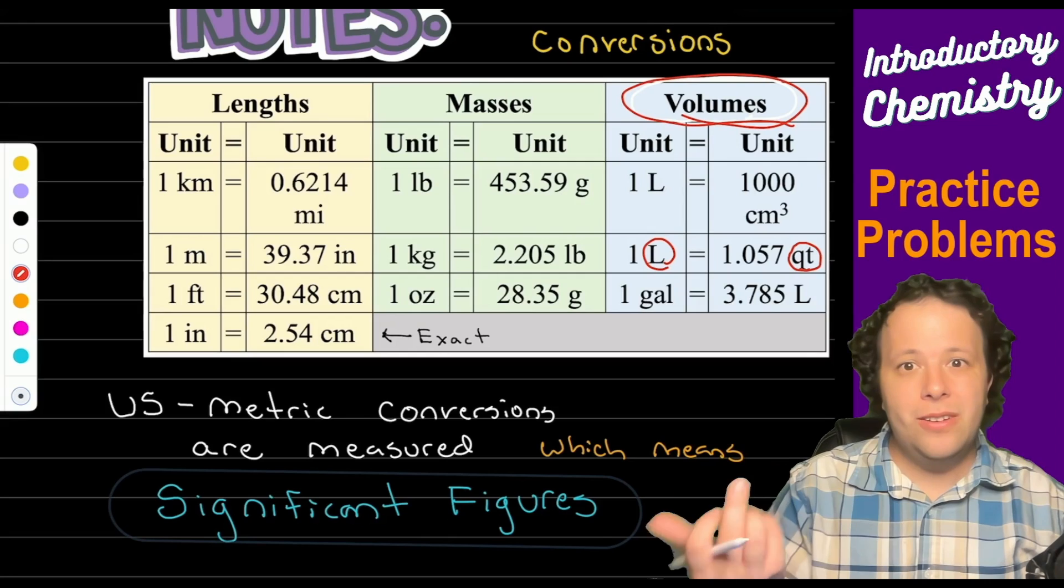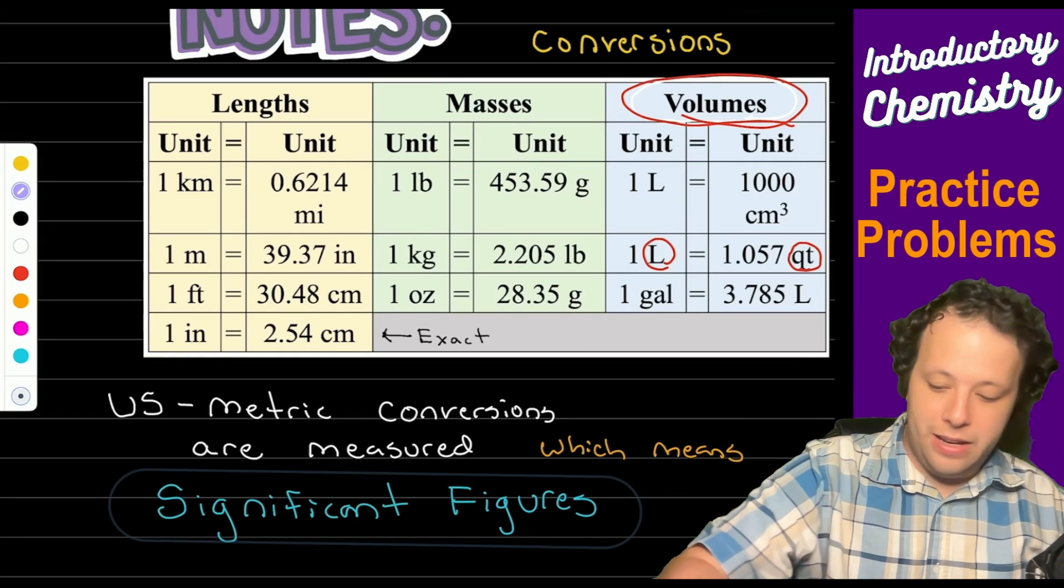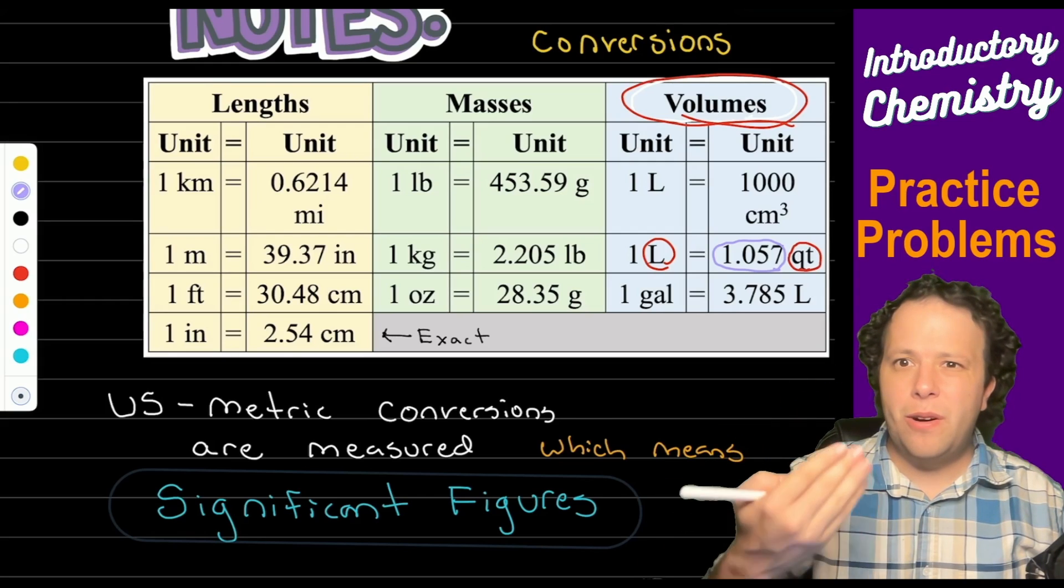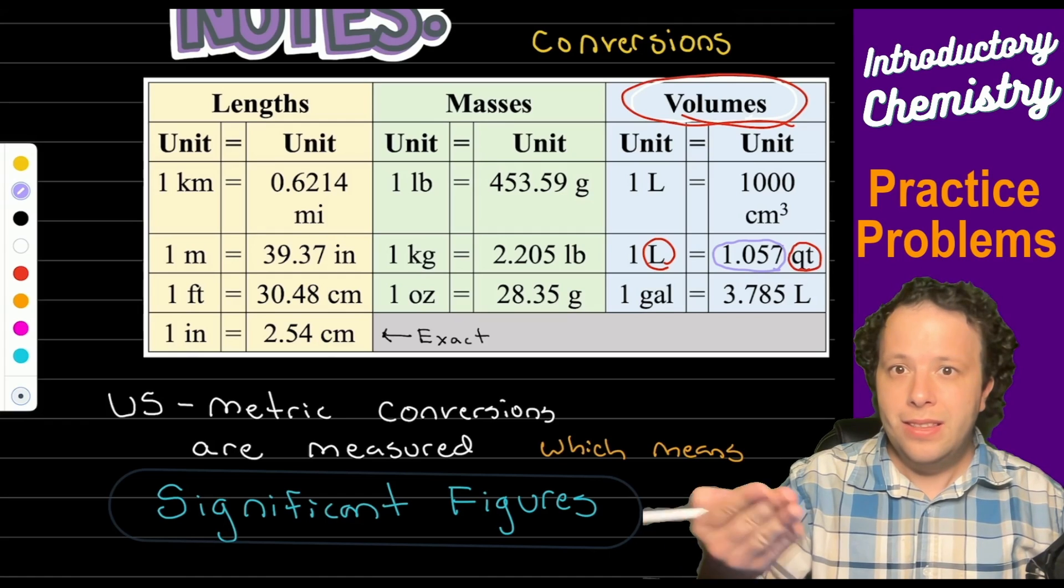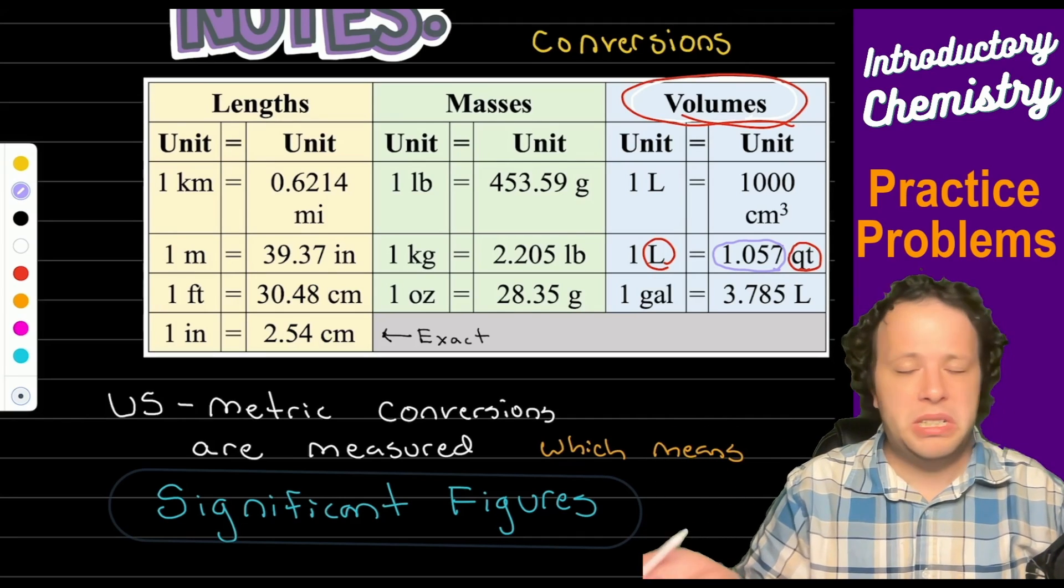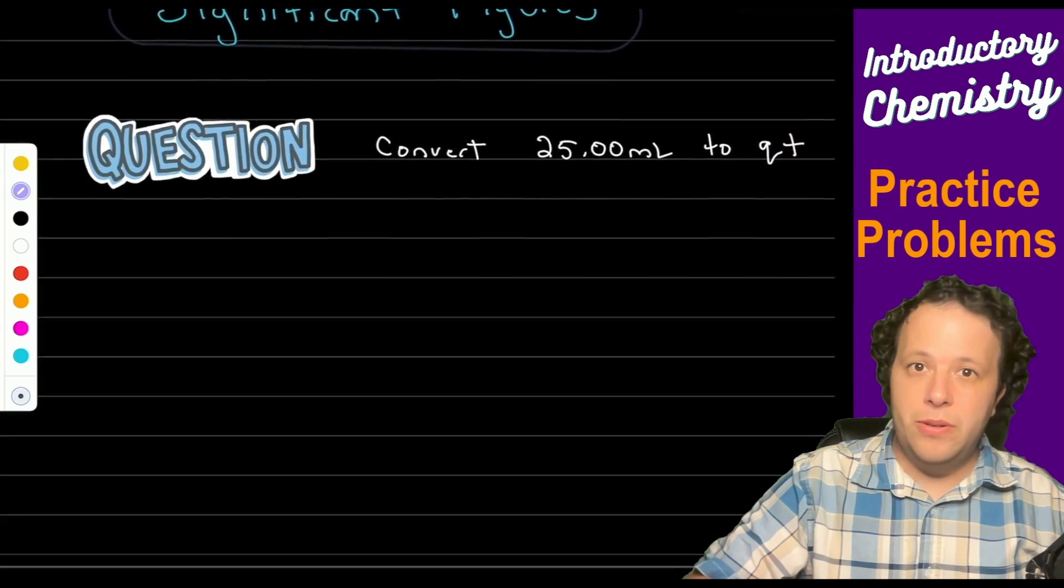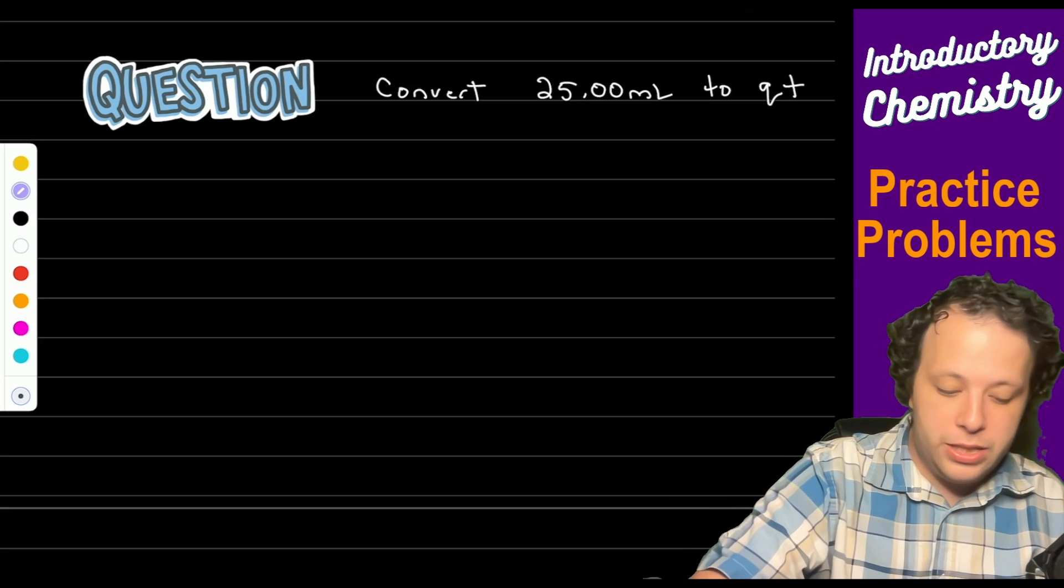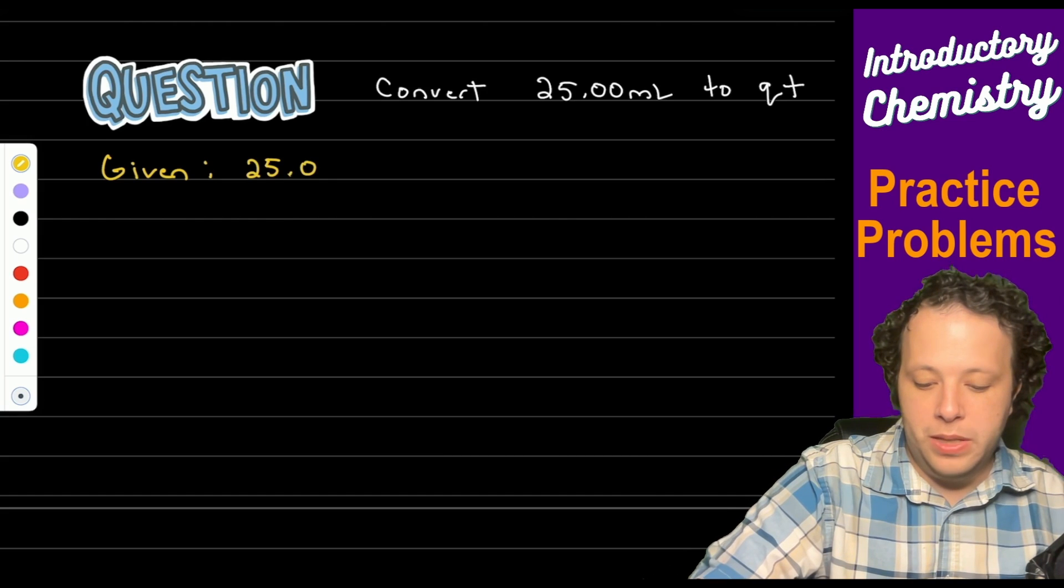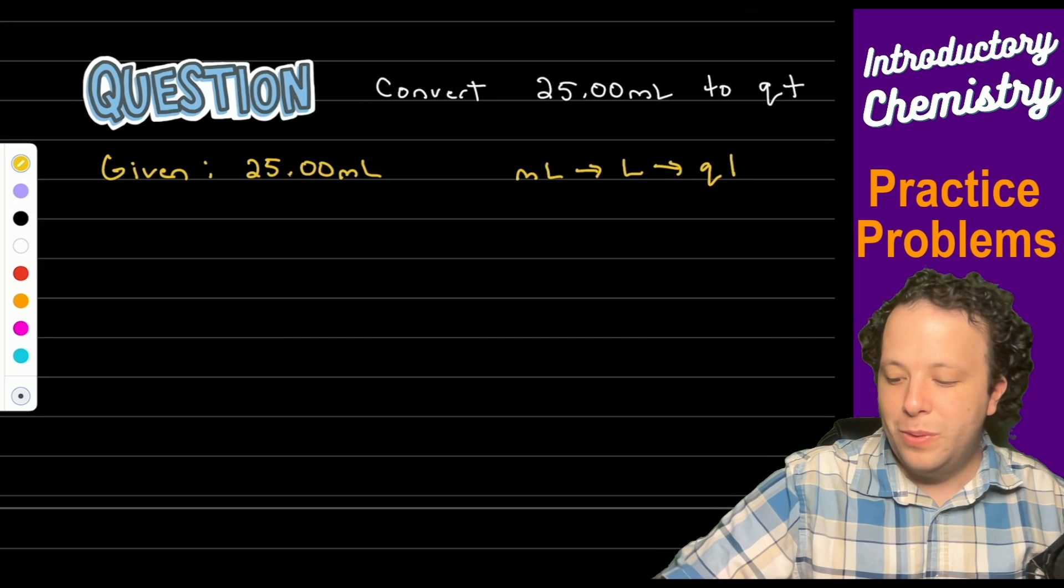Keep in mind depending on the conversion you use here it could affect your significant figures. So you see the 1.057 that is 4 sig figs. So if our original number is 5 or greater that means that we'd have to round our final answer to 4 sig figs. Let's write down our given and all of our pieces. So we have 25 milliliters.